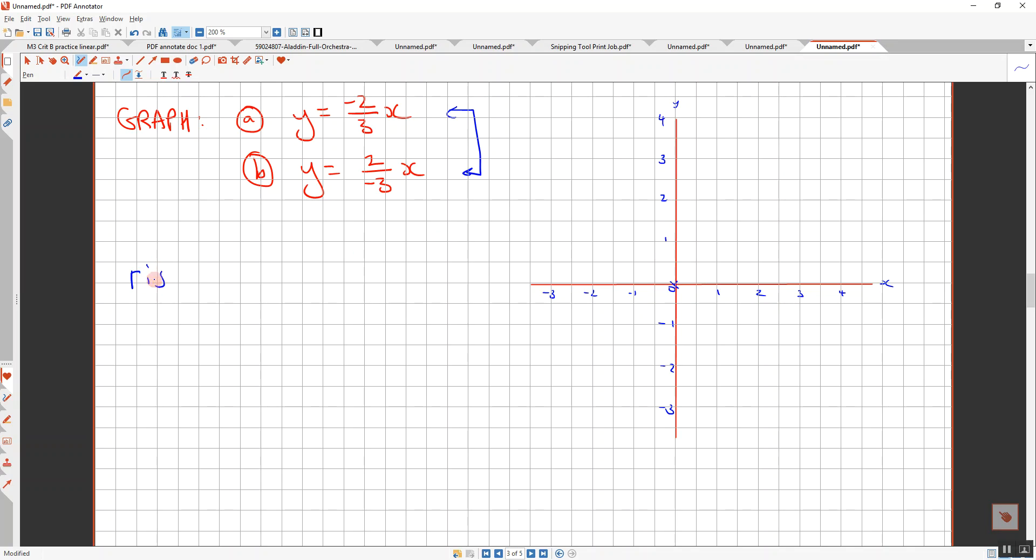I have got rise over run. Our rise is negative two, so I go down two, and our run is three: 1, 2, 3. So this line, I need a better way to draw these, it's going to go through these two points. So, and I'm going to label it. This is y equals negative two over three x.